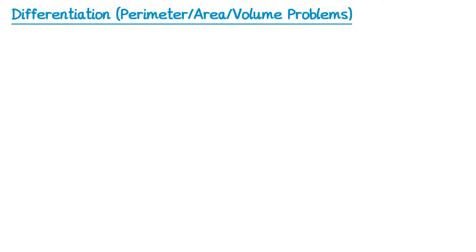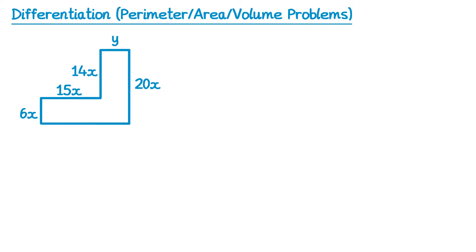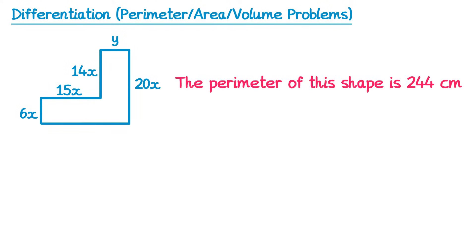In this video we're going to look at how you can use differentiation to solve problems involving perimeter, area and volume. There are some exam questions in this video's description that you can try afterwards. So here we have a compound shape with various dimensions and we're told the perimeter of this shape is 244cm, and we're asked to first of all show that y equals 122 minus 35x.